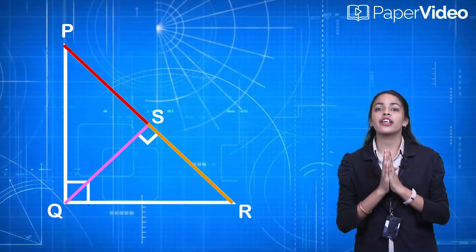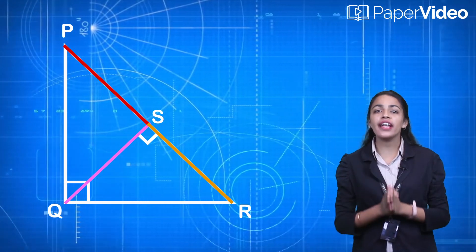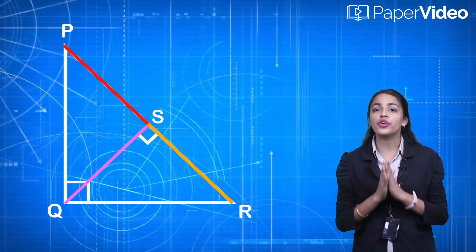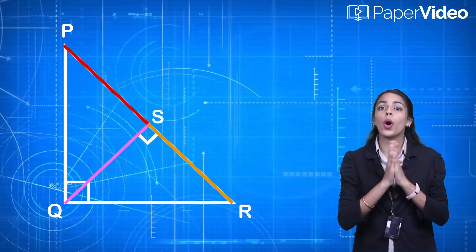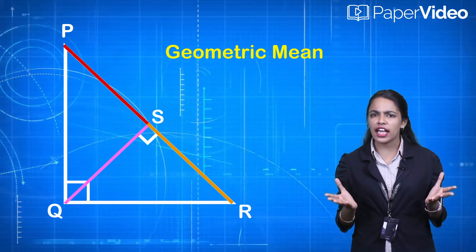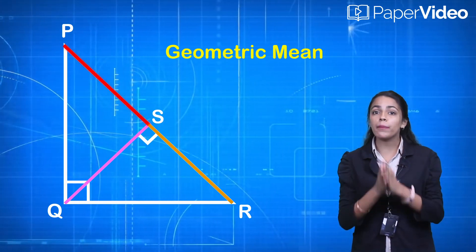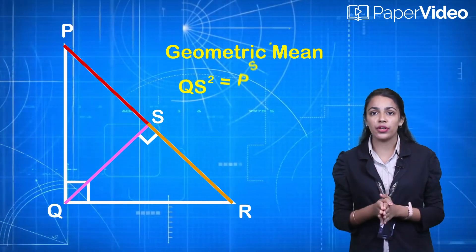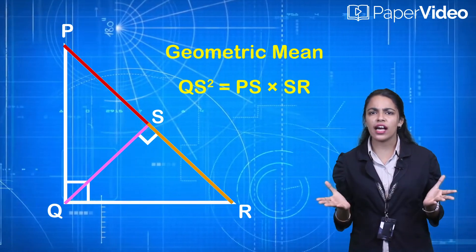Therefore, we can conclude that in a right angle triangle, the perpendicular segment to the hypotenuse from the opposite vertex is the geometric mean of the segments into which the hypotenuse is divided. That is, QS squared equals PS times SR.